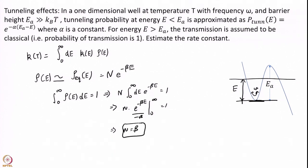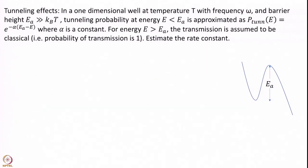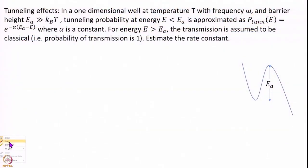You can quickly show this easily enough. The first part is fine — I know rho(E). The second part: how do I calculate K(E)? Well, let us start by saying that for E greater than Ea, K(E) equals omega over 2 pi, and we will calculate E less than Ea separately.